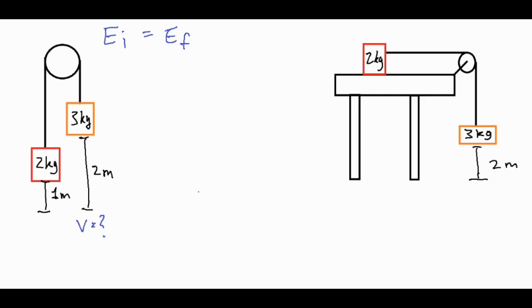So let's take a look at what initial values we're going to have. We're going to have some gravitational potential energy from our two kilogram block and some gravitational potential energy for our three kilogram block, and both of them are at rest initially. So that's about all we have because there's no elastic and there's no movement.